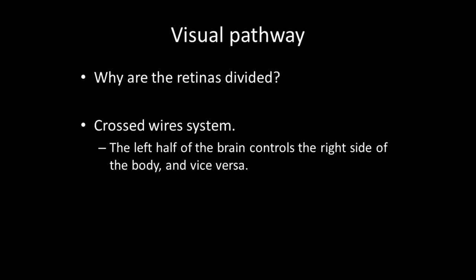You might ask why the retinas are divided. Basically, the brain works on a crossed wires system — the left half of the brain controls the right side of the body and vice versa. Therefore, the left half of the brain is only interested in visual input from the right side of the world.